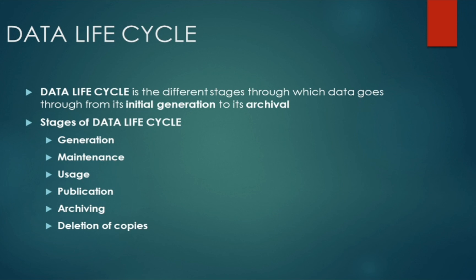Then comes the publication phase, where data is put forward for the public. Publication may or may not be part of the life cycle, depending on what data we are working with. Once that is done, we archive the data — it is removed from all active production environments, meaning no more general access. In some cases, we also do purging, where copies of the data are deleted so that no one can access it any further. This is the initial understanding of data concepts, reporting, and analysis — the foundation for data mining, data warehouse, and BI.